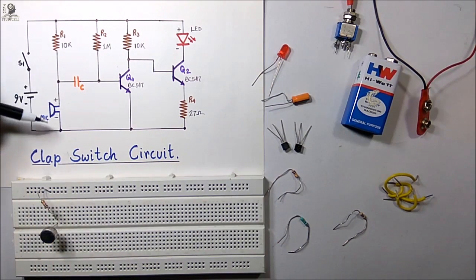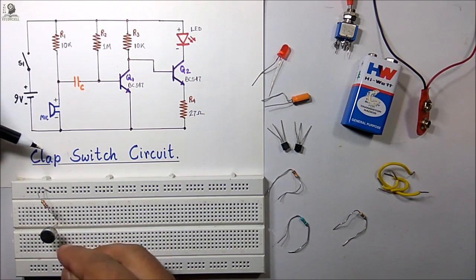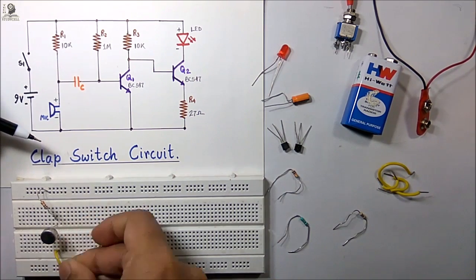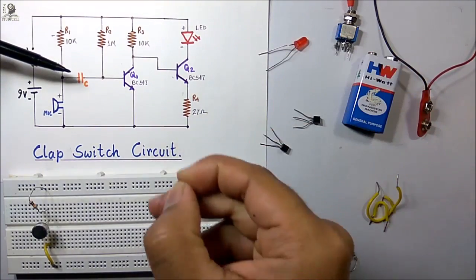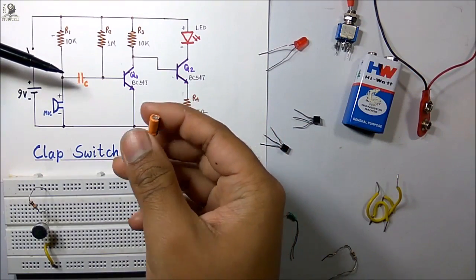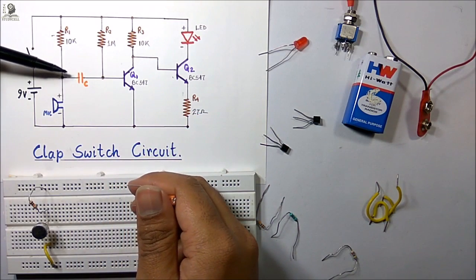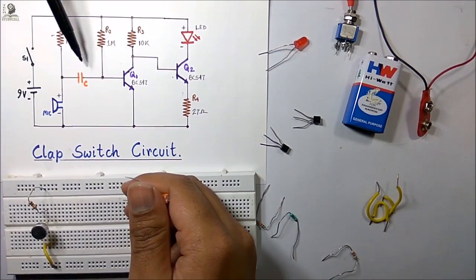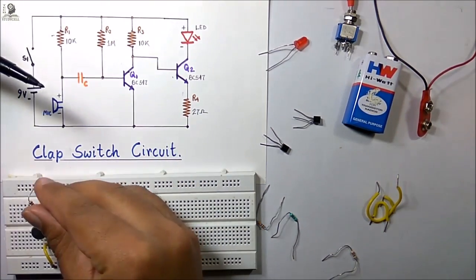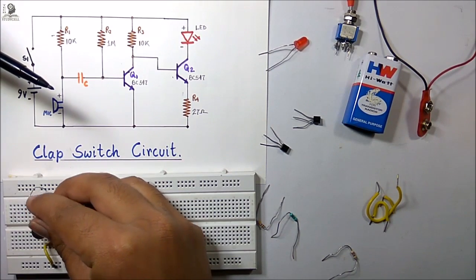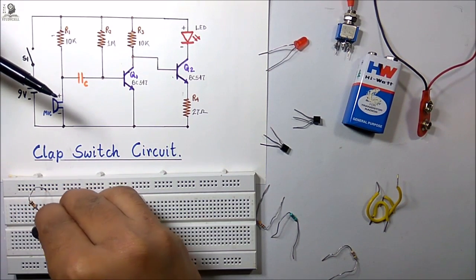Next, with the help of a jumper wire I am connecting the negative terminal of the mic to the negative rail. Now I am connecting the 2.2 microfarad capacitor to the circuit. This is the positive terminal and this is the negative terminal of the capacitor. I am connecting the positive terminal of the capacitor with the positive terminal of the mic as shown.